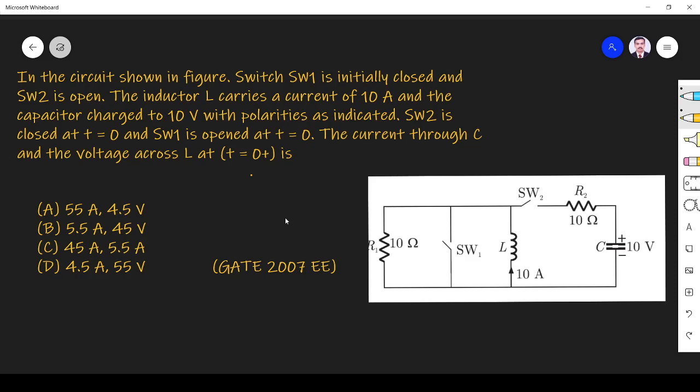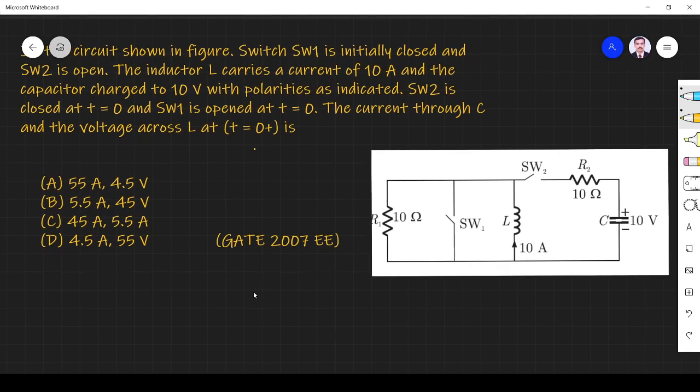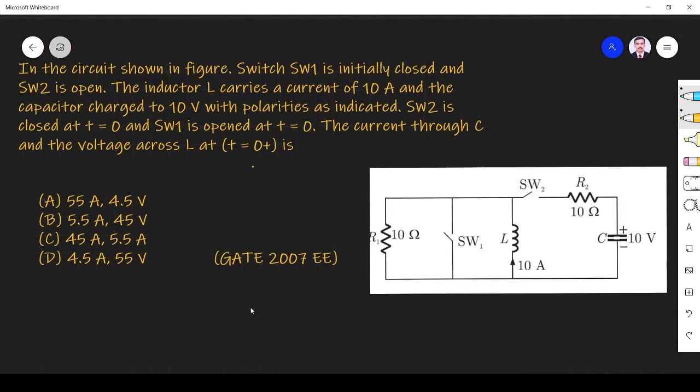The question is: in the circuit shown in figure, switch S1 is initially closed and S2 is open. The inductor L carries a current of 10A and the capacitor is charged to 10V with polarities as indicated. Switch S2 is closed at T equals 0 and switch S1 is opened at T equals 0. The current through capacitor and voltage across inductor at T equals 0 plus is what they are asking.